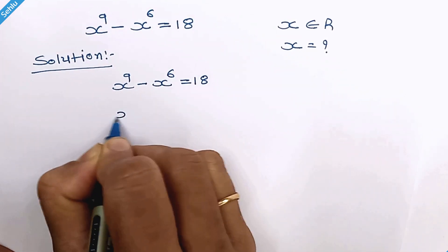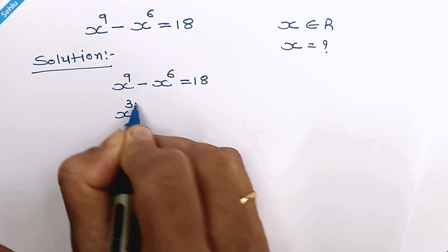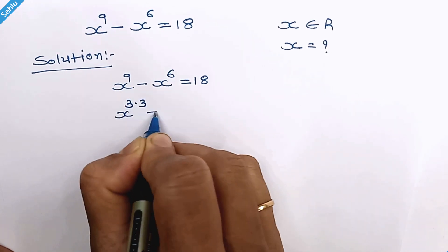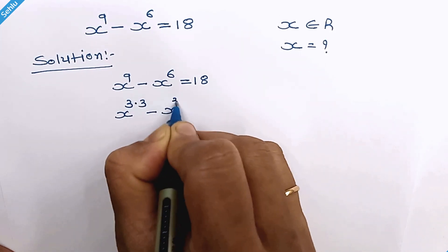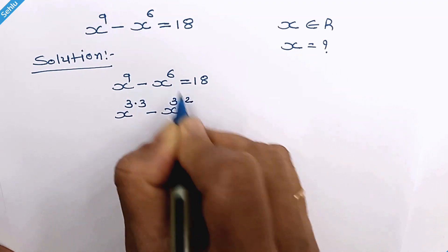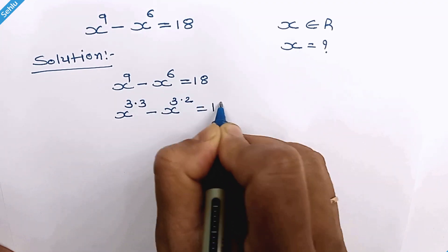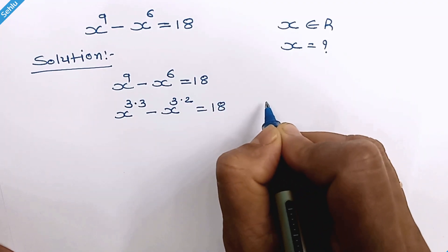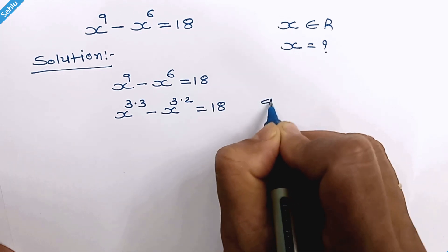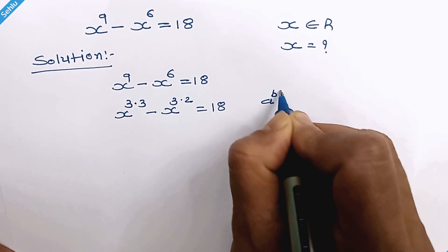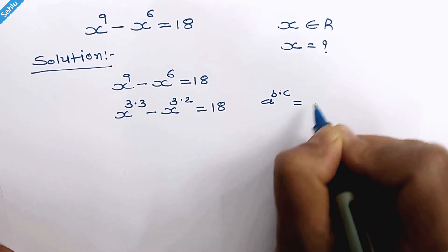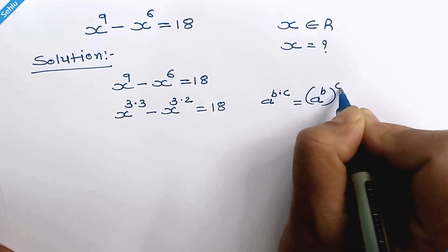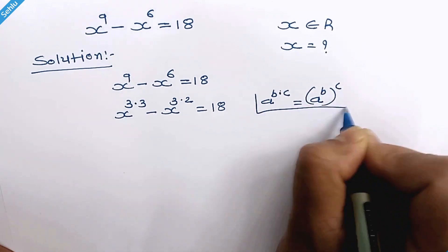We can write x raised to 3 times 3 in place of 9, and x raised to 3 times 2 in place of 6, giving us 18. Let's recall the rule where a raised to b times c equals a raised to b, whole raised to c.